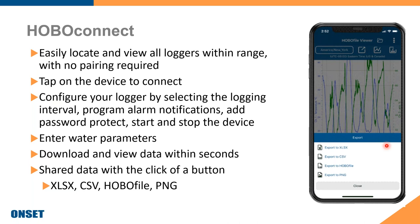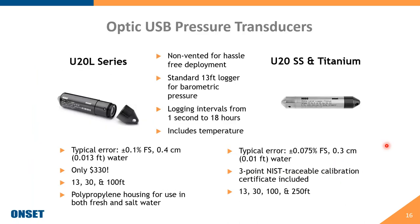Now for the main topic today: the optic USB pressure transducers — the U20 and U20L loggers. These are most commonly used in stream and wetlands hydrology because there are typically many wells at a site, making these the most economical solution. There is also usually a need to visit the site to check vegetation, making these a great fit. Both are non-vented for hassle-free deployment with no vent tube cleaning required.